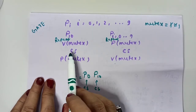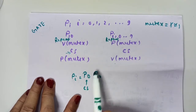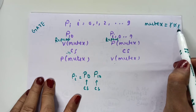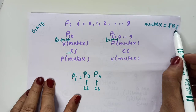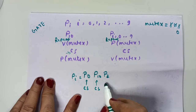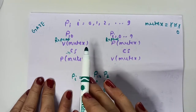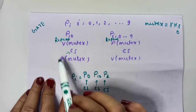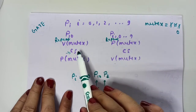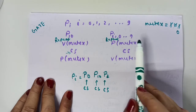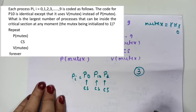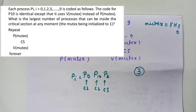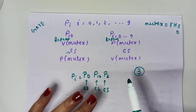Since both P0 and P10 are in the critical section and mutex is now 1, if context switching happens and any one of the remaining processes P1 through P9 gets a chance, that process can acquire the mutex (decrement to 0) and enter the critical section too. So at a time, three processes can be inside the critical section, creating a race condition.